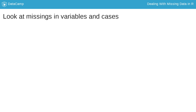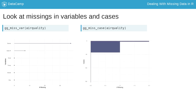To quickly show the missingness in variables and cases, we visualize them using gg-miss-var and gg-miss-case. Note that these are visual analogues of the miss-var summary and miss-case summary functions. These plots show the amount of missingness on the x-axis. For gg-miss-var, each point represents the amount of missingness in that variable, and for gg-miss-case, each line represents the amount of missingness in that case.